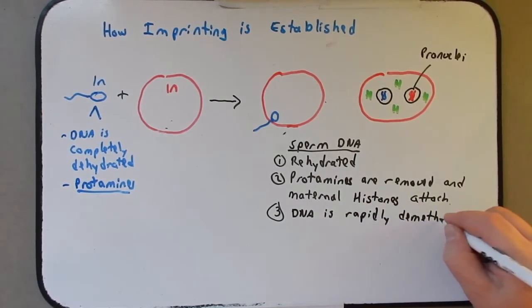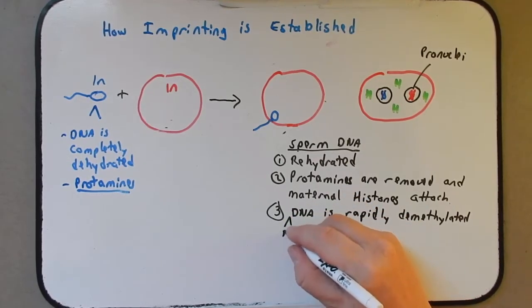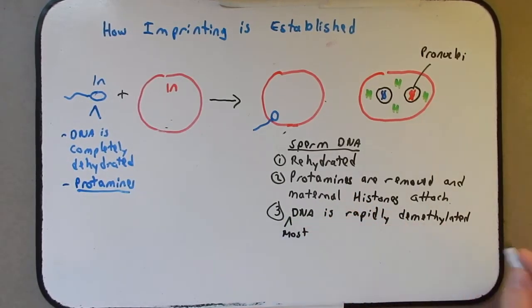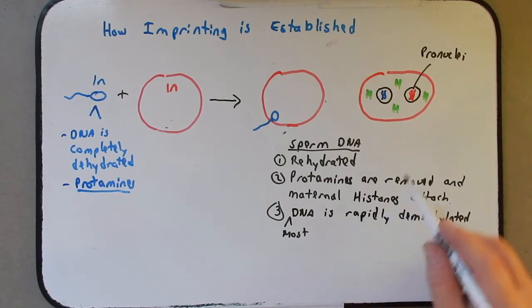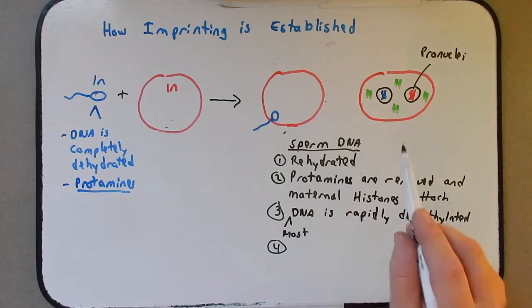All the methyl groups are removed. Actually, to be more clear, because I'm going to change this rule in a second, let's say most DNA is rapidly demethylated. Now I put these as step two and three here, but there's no evidence to suggest the order of these two. We know that the histones package the DNA and we know that the methyl groups are removed. But the order is not known. And we'll talk in a moment, but the maternal DNA is also demethylated.